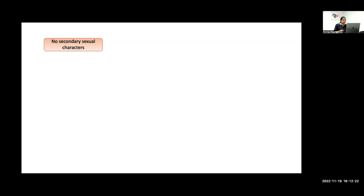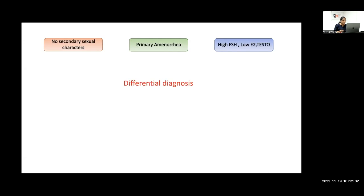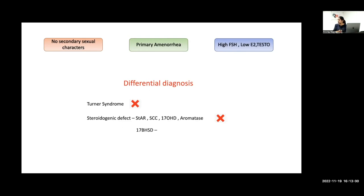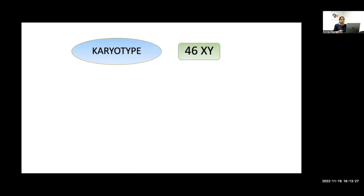So we have a girl with no secondary sexual characteristics, primary amenorrhea, high FSH, and low estrogen. Differentials include: Turner syndrome — ruled out because height is tall, not short. Steroidogenic defects (StAR, side-chain cleavage with salt wasting; 17-hydroxylase with hypertension; aromatase with high androgens) — ruled out as testosterone is low in this case. Autoimmune or very early acquired ovarian failure are less likely. Gonadal dysgenesis is the leading diagnosis.